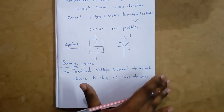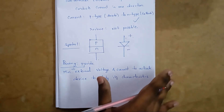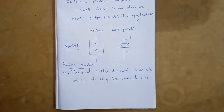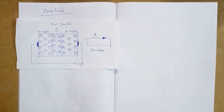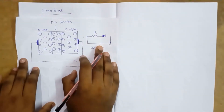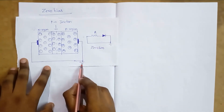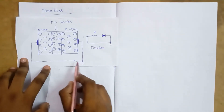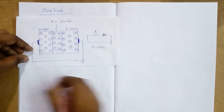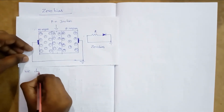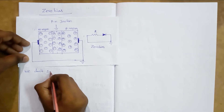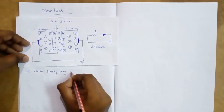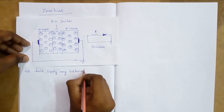This is the diagram for zero bias of PN junction diode. In zero bias, we don't supply any external source.